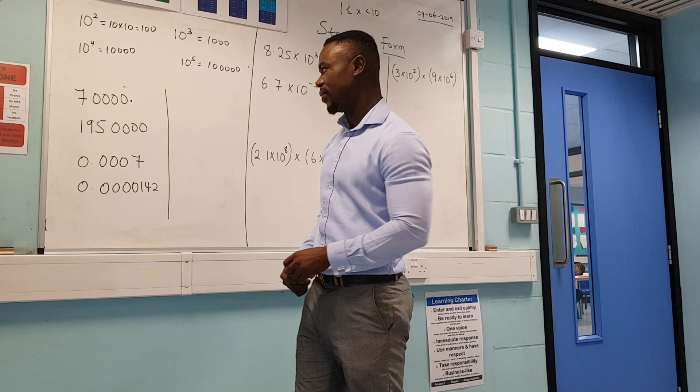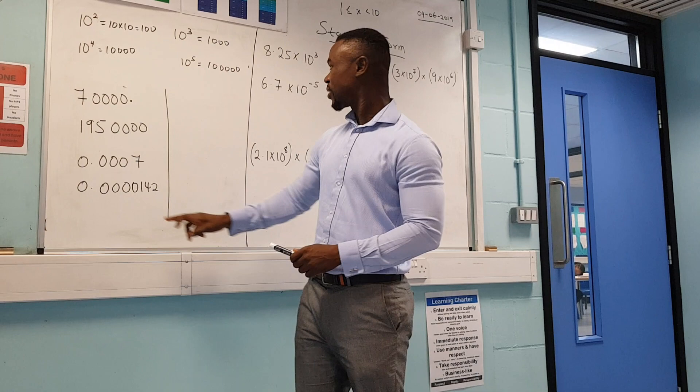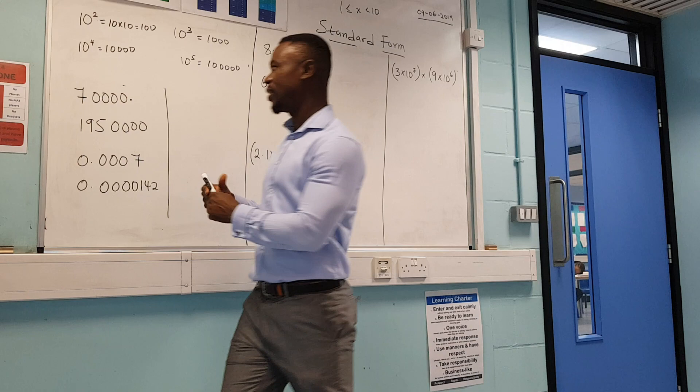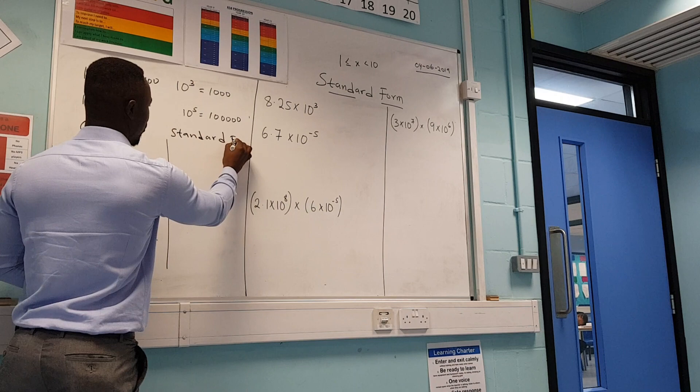There are two types we're looking at: ordinary numbers and standard form. We're first going to learn how to write from an ordinary number to standard form. Here we have seven thousand — that is an ordinary number — and we're going to write it in standard form.